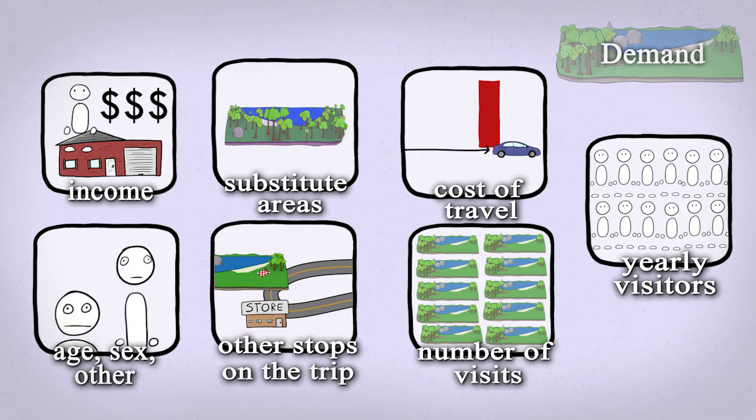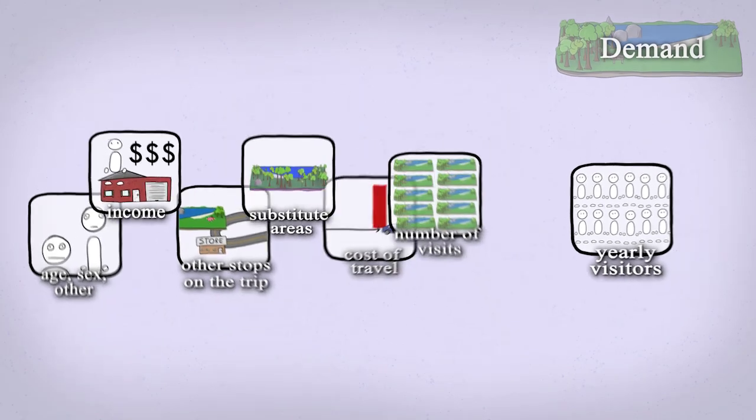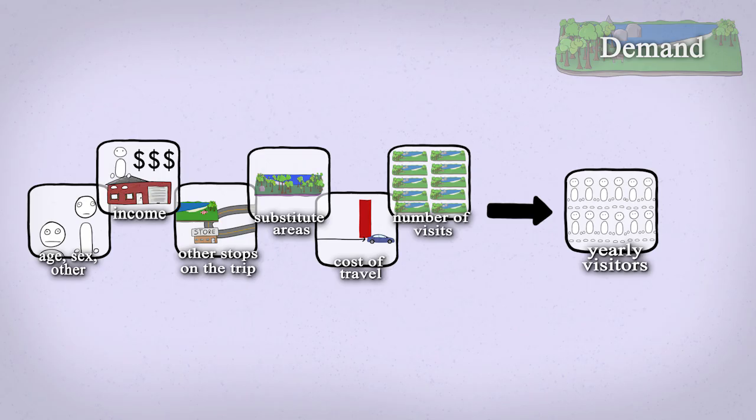If we can collect information for this stuff, we can use regression analysis to try to build the relationships between the stuff and the amount the area is used, or the demand.